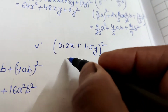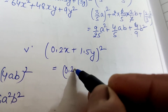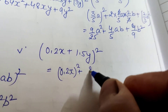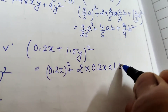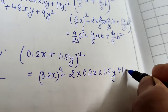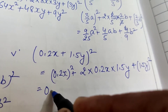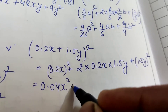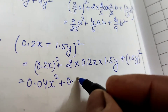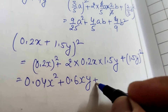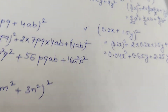The fifth question is (0.2x + 1.5y)². Square of the first number: (0.2x)² = 0.04x². Then 2ab: 2 × 0.2x × 1.5y = 0.6xy. And (1.5y)² = 2.25y². So the answer is 0.04x² + 0.6xy + 2.25y².